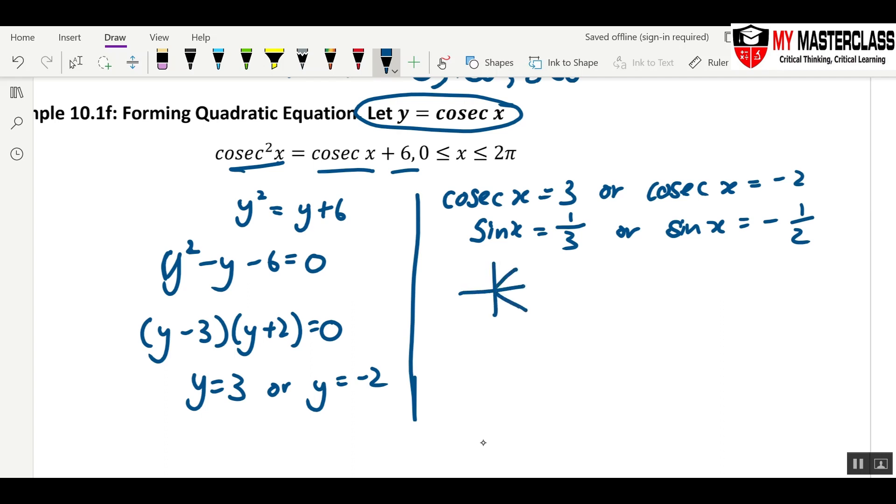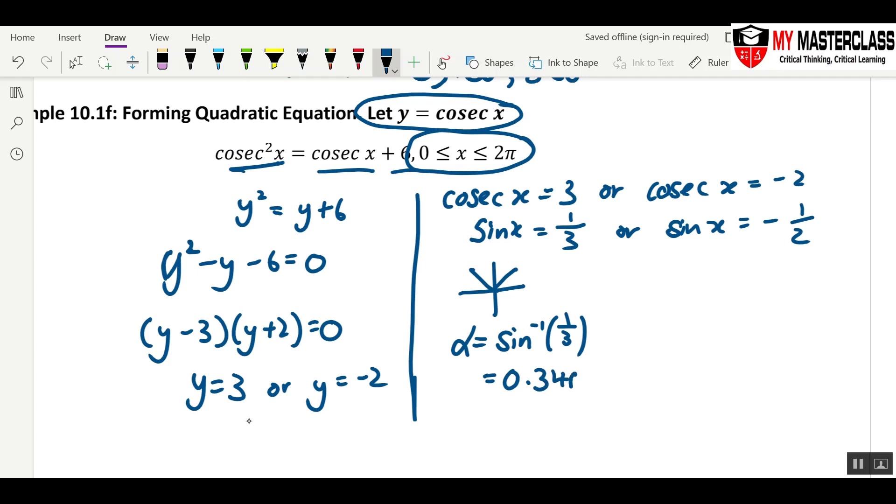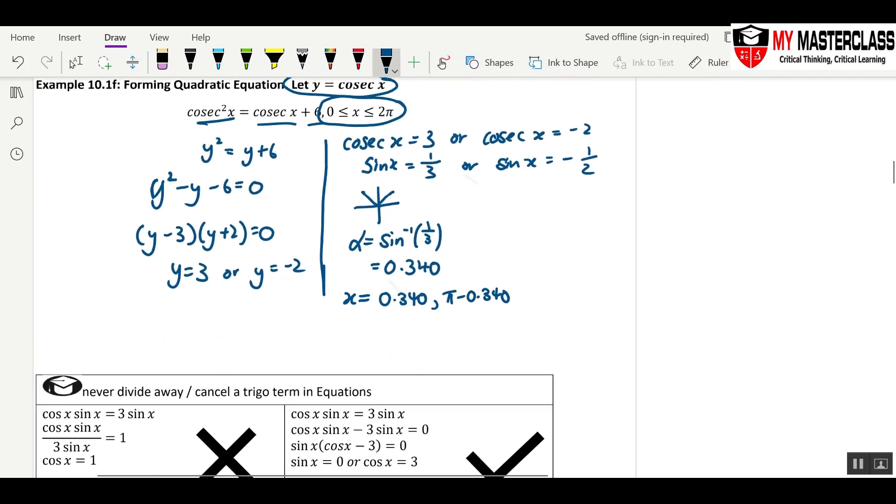This is in first and second quadrant. So basic angle equals to inverse sine 1 over 3. And the question is asking for radian. So I put inverse sine 1 over 3, and you are going to get 0.340. Then x is in 0.340. The other one would be pi minus 0.340.